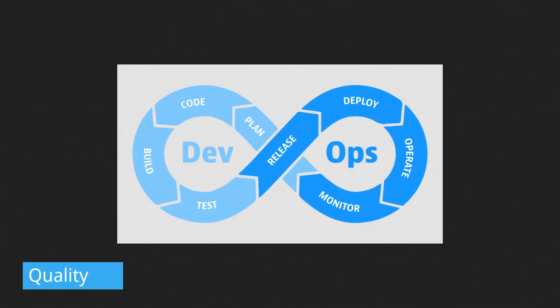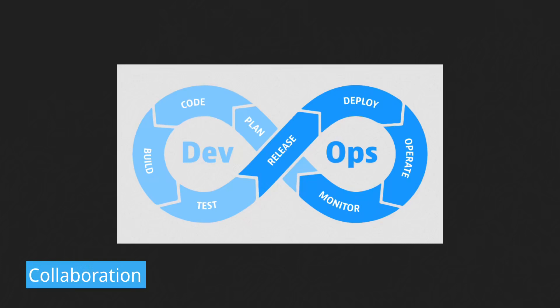Having an automated process for testing and quality assurance also ensures that the software being released is high quality and bug-free — well tested. This will reduce the risk of bugs and other issues, which will eventually improve the overall user experience.